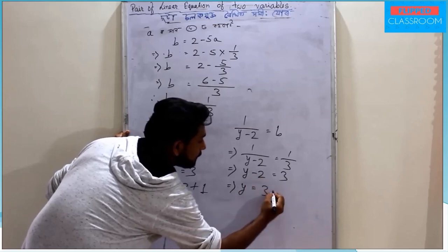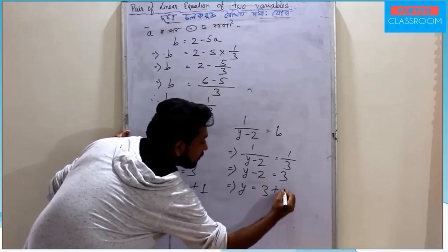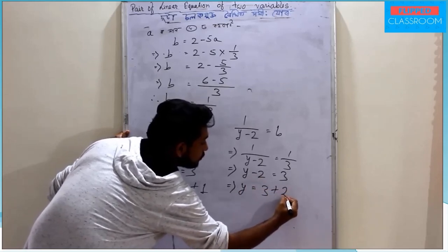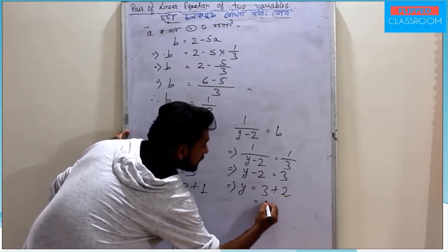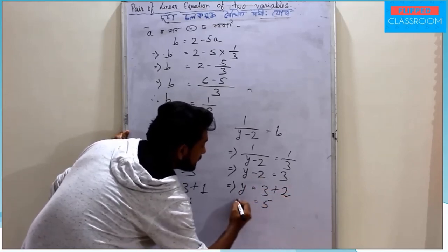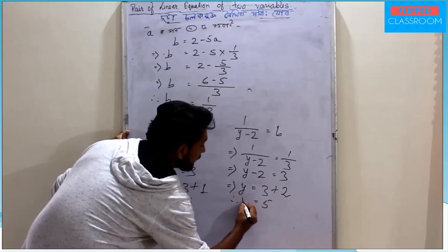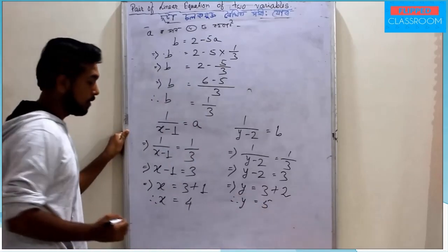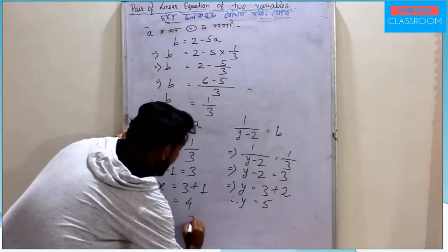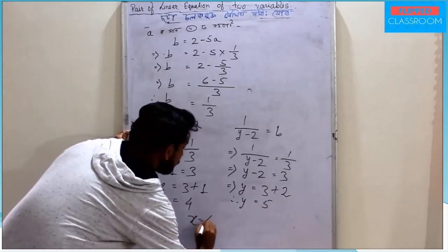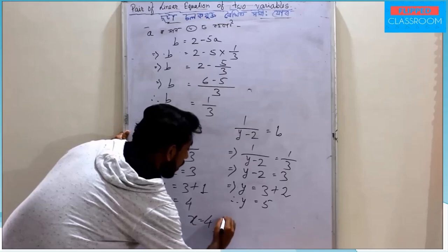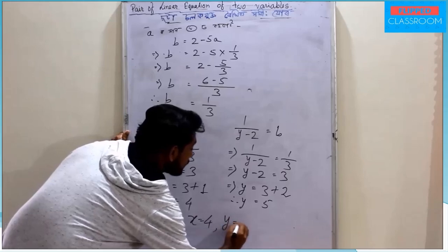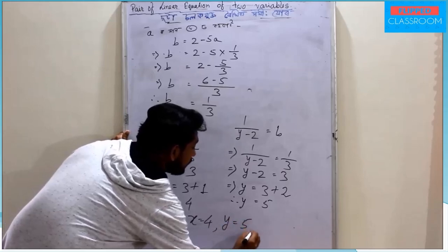So the final answer is x equals 4 and y equals 5.